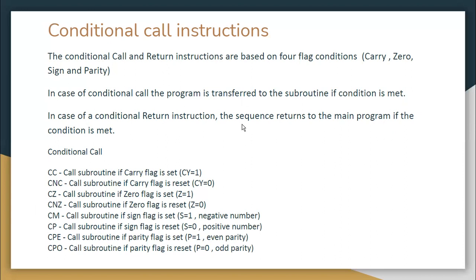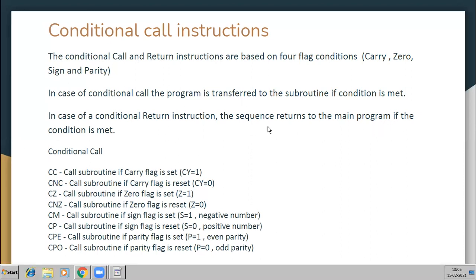In case of a conditional return instruction, the sequence returns to the main program only if the condition is met. For example, while returning you may return to a particular location in the main program. If a different condition is met, you can return to some other location — this happens while writing programs.